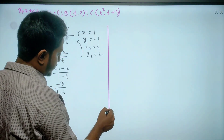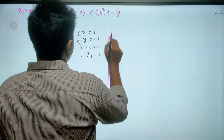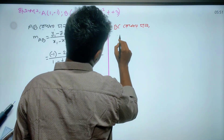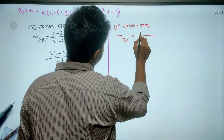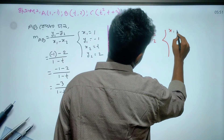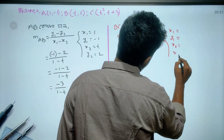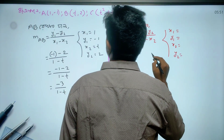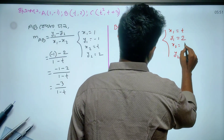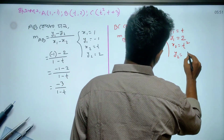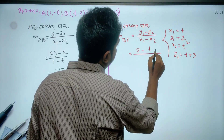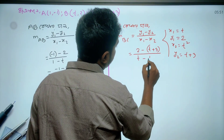એર પરે આમરા બાક્યં સોટા એ પાશી લીક્છી દેખ્ઓ. બીસી રેખાર ડાલ એ પૂર્ભેર આંકેર મતો, તભે એકાને આગેર મતો એ orrect. એકાને એ x1, x2, y1, y2 — દેએદલામ.